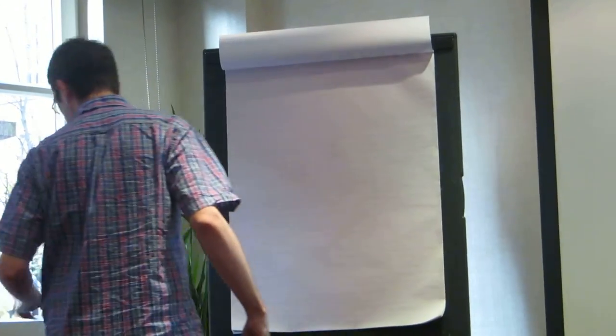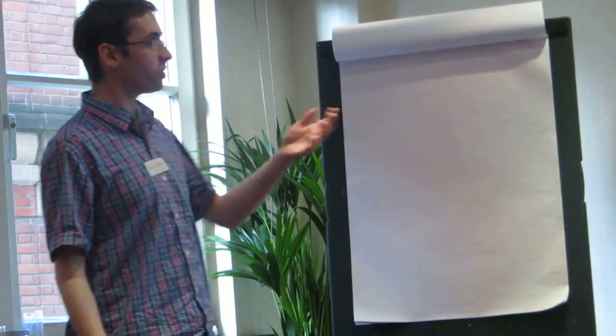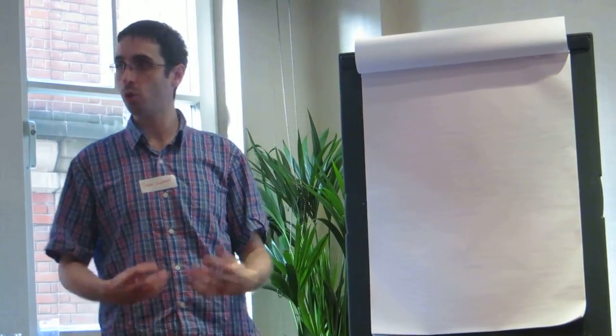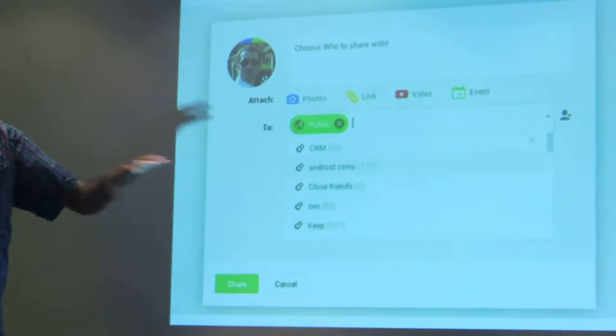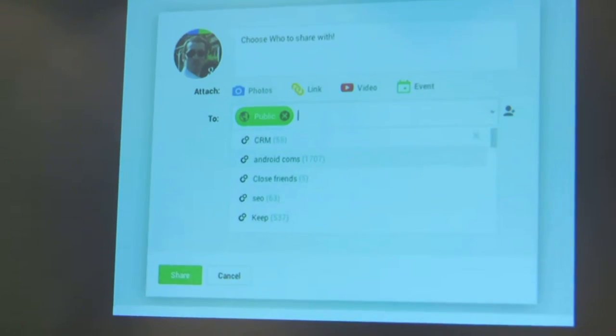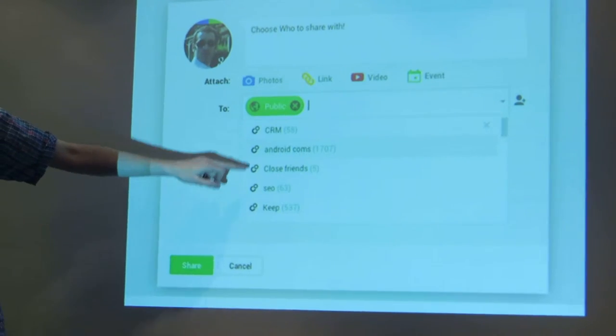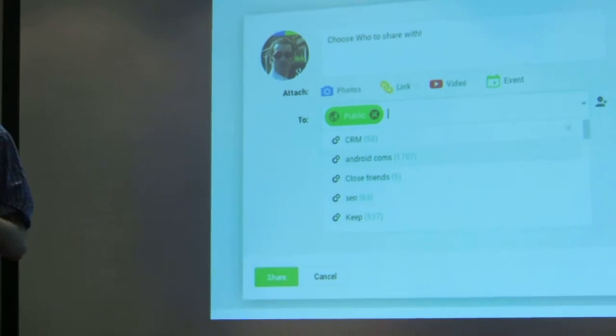When I come to actually share content, I can just choose who I want to share it to. And it's all done quickly and simply. If I want to send something public to the entire world, I can do that. Or I can pick an individual circle and share that content just with those individual people.